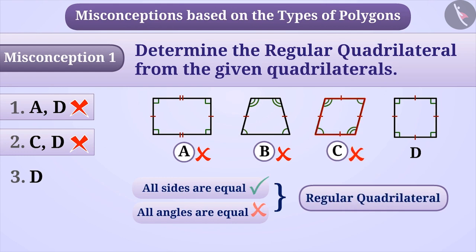If we talk about figure D, then all the sides are equal, and all the angles are also equal, so it is a regular quadrilateral. In this way, amongst the given figures, only D is a regular quadrilateral. Hence, option 3 is the correct answer to the given question.